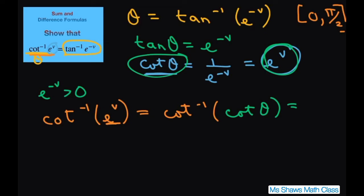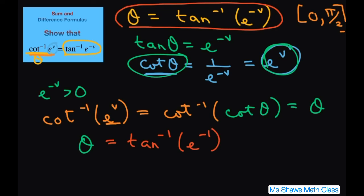Well when you take the inverse of the function you just get theta. So then we have theta. We know theta equals this. So theta equals tan inverse of e to the negative v. So we have shown that that equals that.